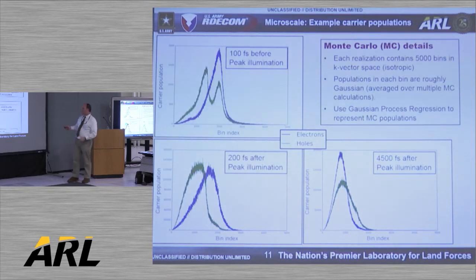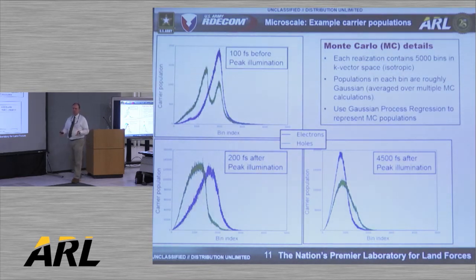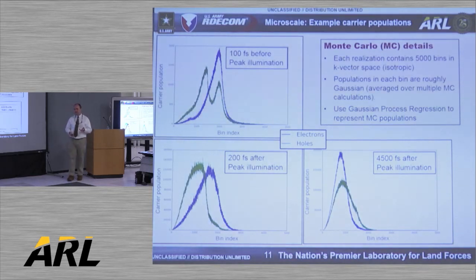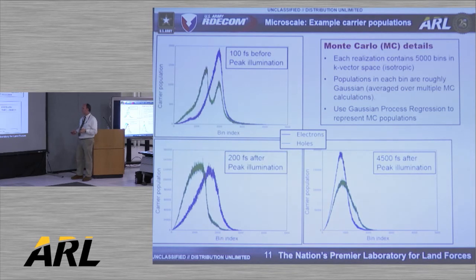As calculated in the microscale model, we have essentially four different parameters over more than 5,000 bins — so on the order of 20,000 parameters are used to represent the microscale at every time step. 20,000 parameters is out of reach for Gaussian process regression right now, and frankly we don't want to deal with that much data. However, it looks like we can reduce it down to somewhere on the order of about 100 parameters to represent these internal states. Unless you're actively illuminating the material, you only need about half that — so we're hoping to get away with somewhere between 50 and 100 parameters.